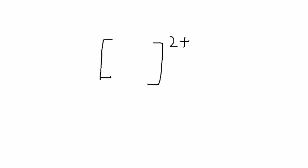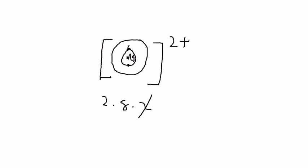Now let's draw the actual ionic bonding for magnesium fluoride. Magnesium is drawn at the center. It loses 2 electrons, forming a 2+ ion. Its configuration goes from 2, 8, 2 to 2, 8 — only two layers remain, with 8 electrons in the second layer.